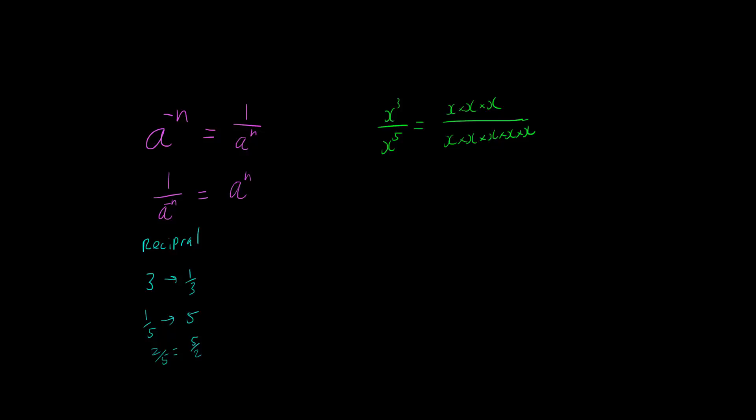then we can see that there are going to be items that cancel out. So 1 x cancels out, 2 x cancels out, 3 x cancels out, and that means that we're left with 1 over x times x, which is 1 over x squared.